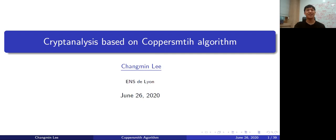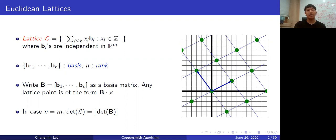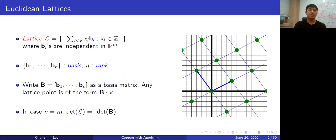Thank you for your introduction. Today I will talk about cryptanalysis based on the Coppersmith algorithm. As a beginning notion, I first define a lattice. A lattice is a discrete subgroup of independent vectors. The generative set is called basis. The number of basis vectors is called rank. The concatenation of basis vectors is called basis matrix. Any lattice point can be represented by B times v, where v is the linear coefficient vector.